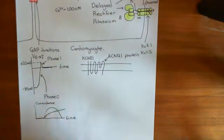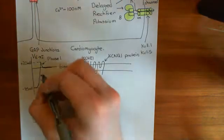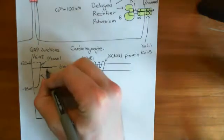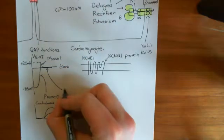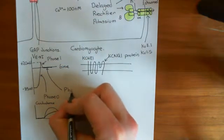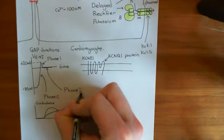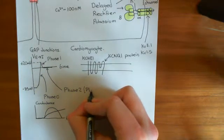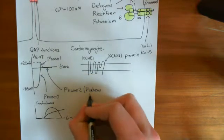What you get is a flat phase of the cardiac action potential at approximately zero millivolts, where the inward and outward positive charge movements balance. This is known as phase two of the cardiac action potential, also commonly called the plateau phase.